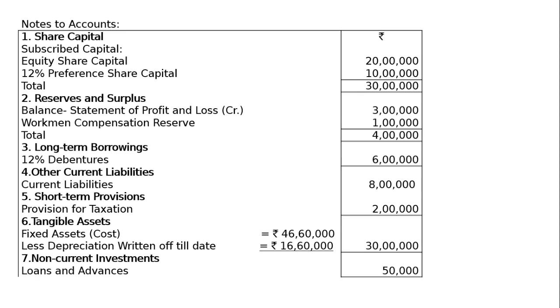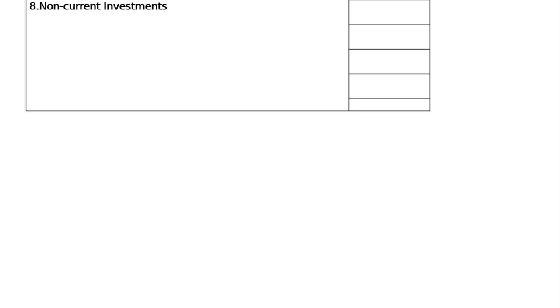Loans and advances: 50,000. Non-current investments. Loans and advances 50,000. These are the final notes to accounts — 7 items, 8 items. Non-current investments, this is the 5th item. Then next one is inventories: stock 6,00,000.